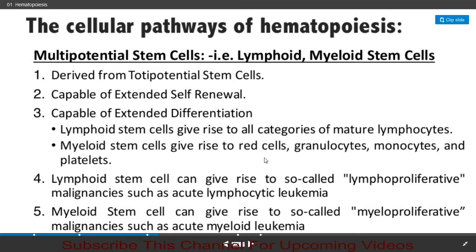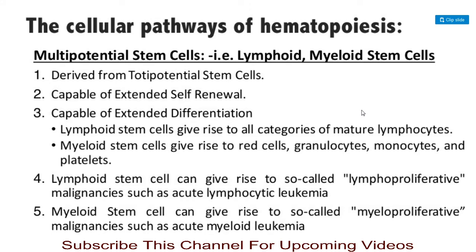Myeloid stem cells can give rise to red cells, granulocytes, monocytes, and platelets. Lymphoid stem cells can give rise to lymphoproliferative malignancies such as acute lymphocytic leukemia, a type of blood cancer. Myeloid stem cells can give rise to myeloproliferative malignancies such as acute myeloid leukemia.